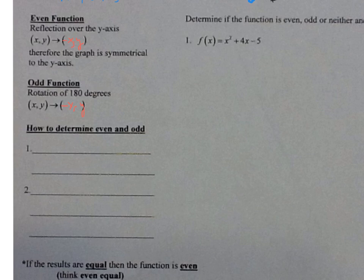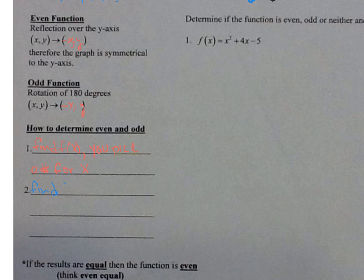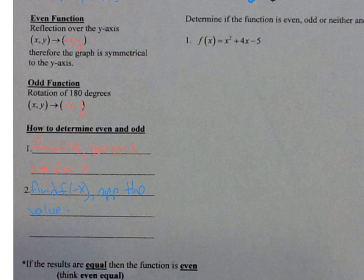So how do we determine if a function is even or odd? Step one: find f(x) — pick a number for x and plug it in. Step two: find f(negative x), so plug in the opposite of the number you used for x.